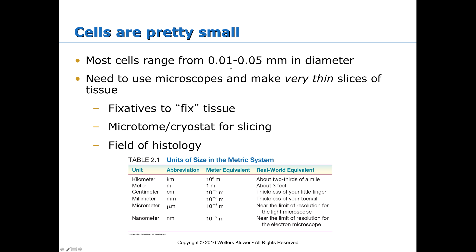Most cells are very small, ranging from about 0.01 to 0.05 millimeters in diameter — very hard to see with the naked eye. We need to use microscopes and make very thin slices of tissue to study cells. This whole process is known as histology, the microscopic analysis of structures in tissue. Fixatives are used to prevent proteins and enzymes from breaking down tissue. Instruments known as microtomes and cryostats are used for slicing tissue into very thin sections. We can then apply stains to visualize different components like cell bodies, axons, white matter, gray matter, etc.